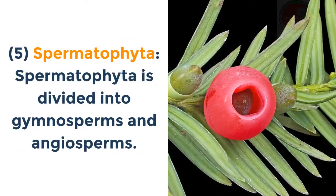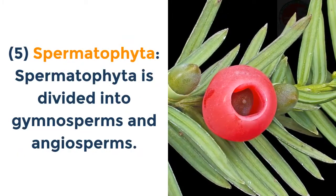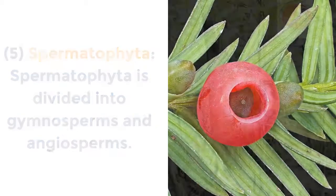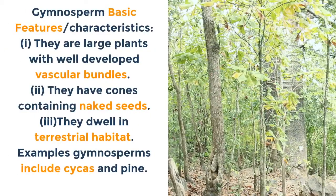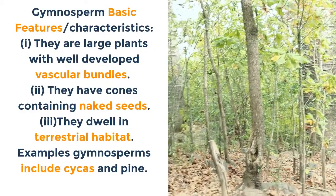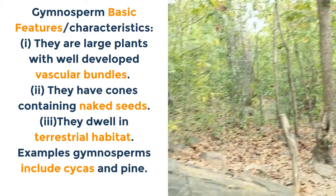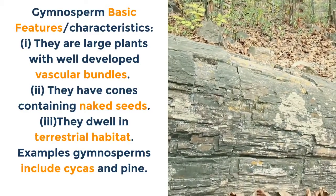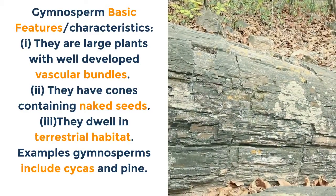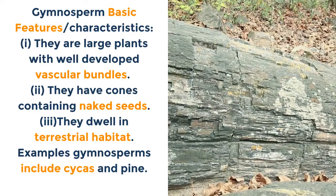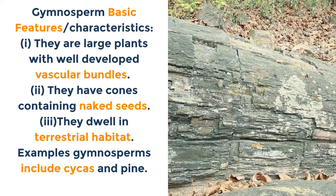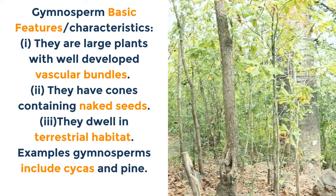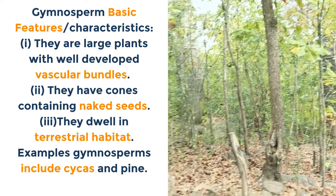Spermatophyta is divided into gymnosperms and angiosperms. Gymnosperms — basic features: i. They are large plants with well-developed vascular bundles. ii. They have cones containing naked seeds. iii. They dwell in terrestrial habitat. Examples of gymnosperms include Cycas and pine.